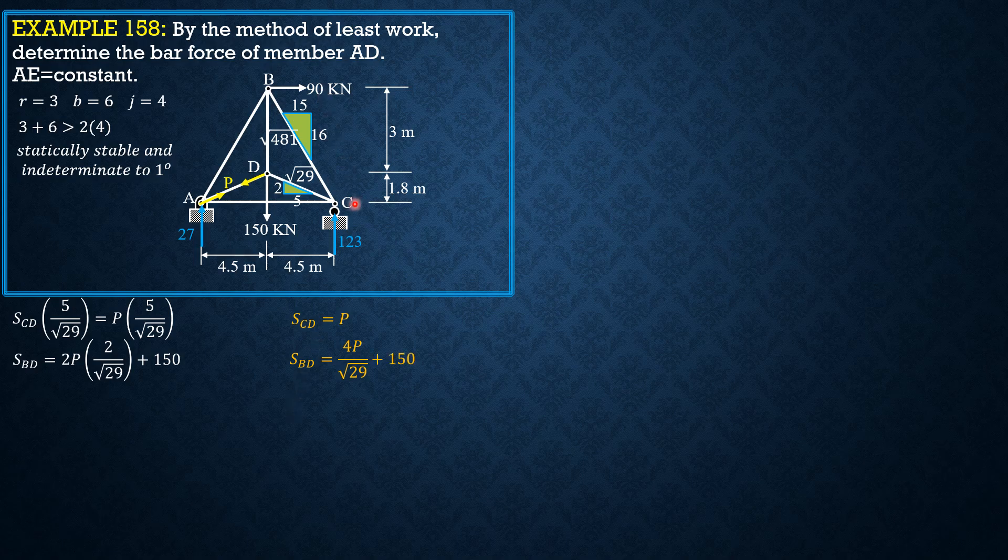Then we proceed to joint C. Summation forces y first, or vertical equal zero. So Sbc times 16 over square root of 481 plus P times 2 over square root of 29 plus 123 equals zero. So Sbc is equal to negative 0.5091P minus 168.6.